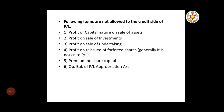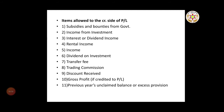There are also items which are not allowed to the credit side of P&L. These items, if credited in the P&L, must be deducted while calculating managerial remuneration. They include: profit of capital nature on sale of assets, profit on sale of investment, profit on sale of undertaking, profit on reissue of forfeited shares, premium on share capital, and opening balance of P&L appropriation.